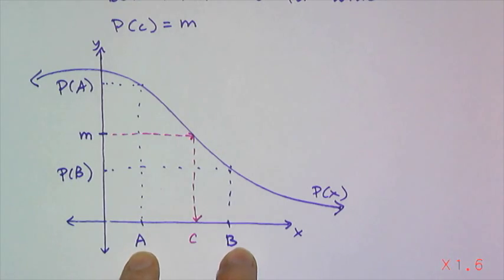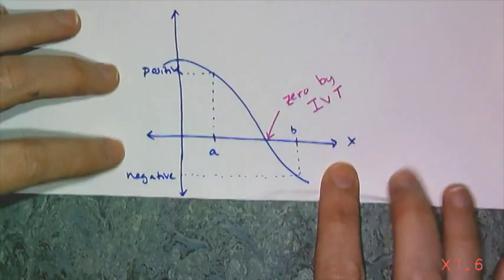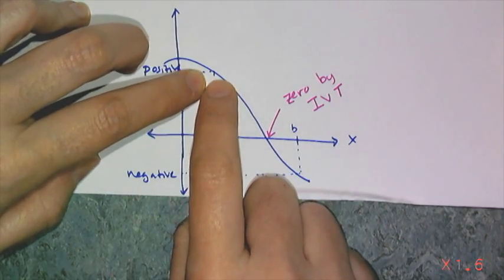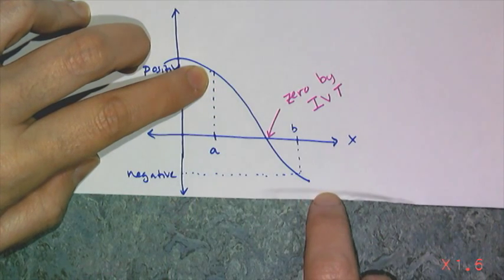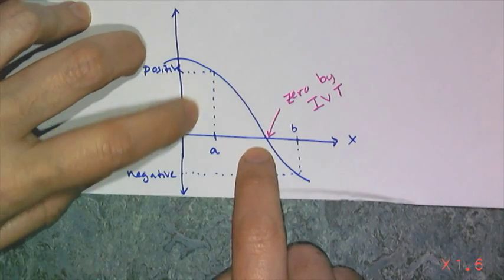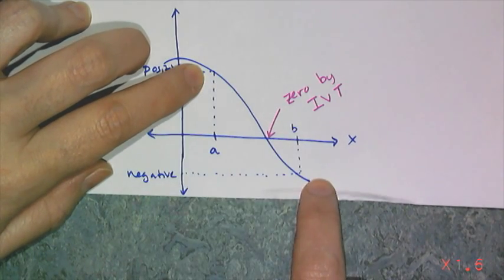If I know that I have some function value that's positive and then it switches to negative, by the Intermediate Value Theorem I know that the zero has to be between where that number is positive and where that number is negative.